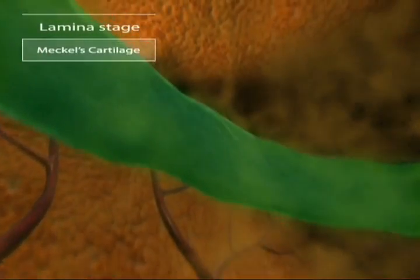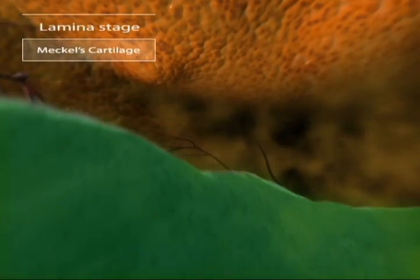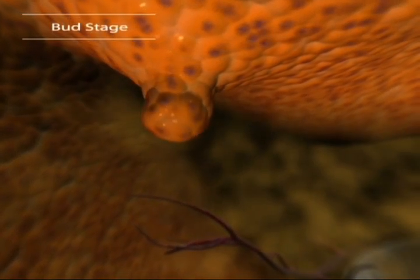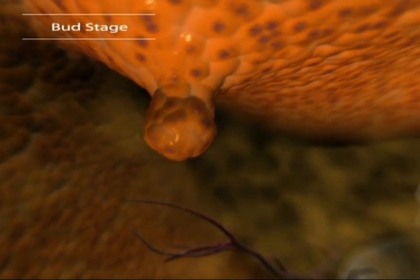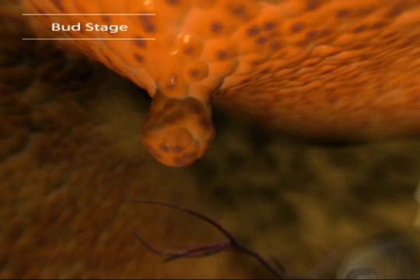Meckel's cartilage provides support for the developing tissues, and the blood vessels that help shape the embryonic teeth are present. By now the lamina has grown into a bud.